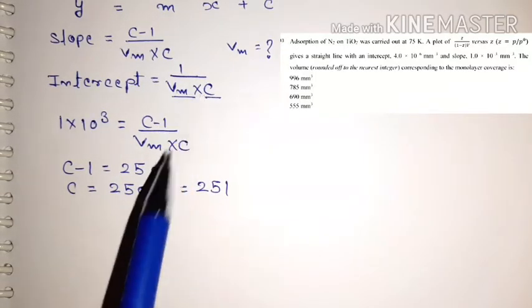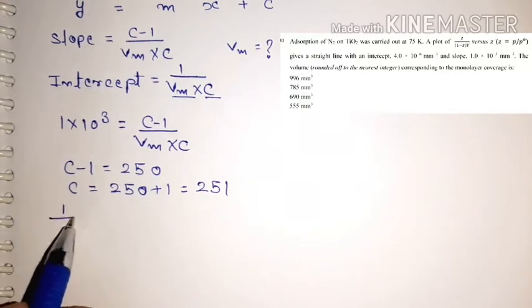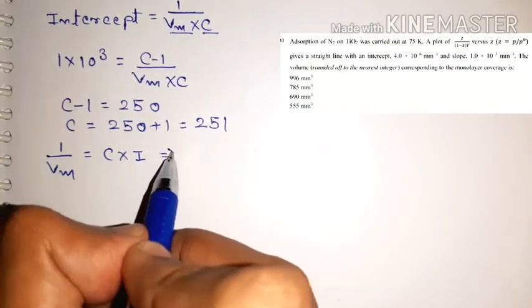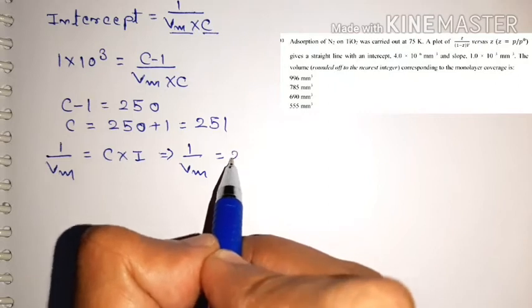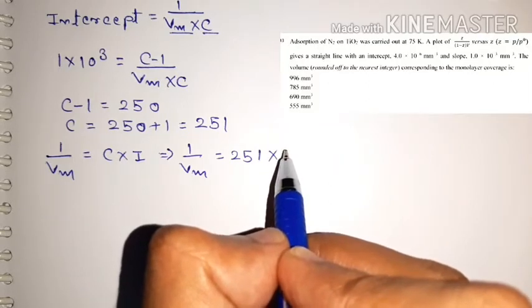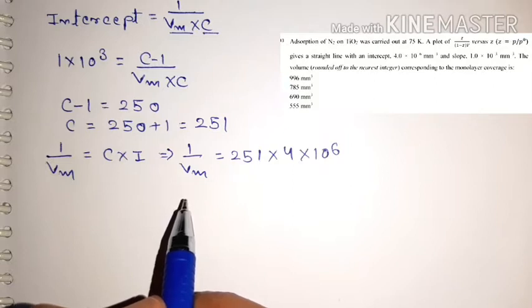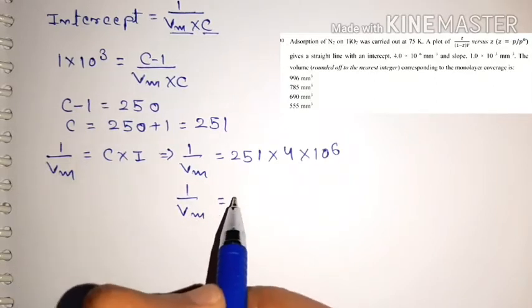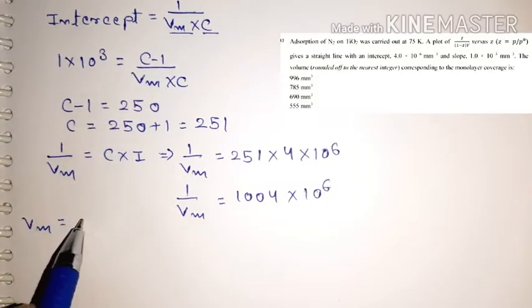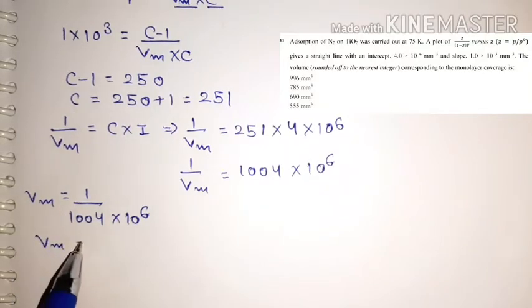Now that we have c, place it into the intercept equation: 1/(Vm·c) = intercept. So 1/Vm = c × intercept = 250 × 4×10⁶ = 1004×10⁶. Therefore Vm = 1/(1004×10⁶), which gives approximately 0.000000996, i.e., ~996 (in the appropriate units).